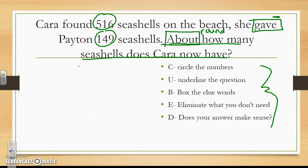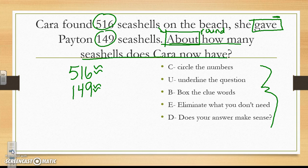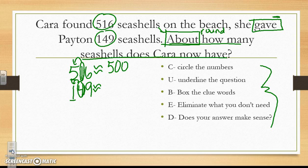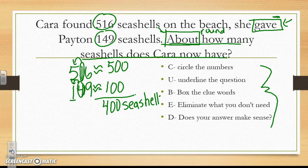Now I am going to solve the problem. I have 516 and 149. Remember, 'about' told me I need to first round. I am going to round to the hundreds place because both numbers have hundreds. I underline the number in the hundreds place and circle the tens place. The 1 is 4 or lower, so the 5 stays the same and the rest become zeros. 'Gave away' tells me to subtract, so I subtract and my answer is 400 seashells. Make sure you label those numbers.